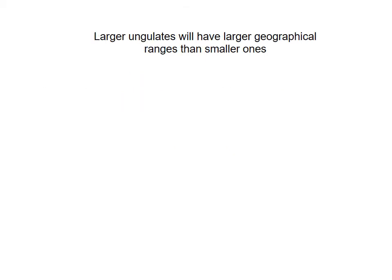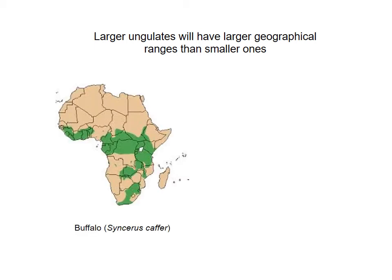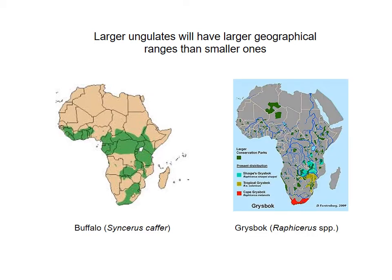Let's investigate whether this is the case by looking at the literature. Will larger ungulates have larger home ranges than smaller ones? This is the geographical distribution for Cape Buffalo across the African continent. Comparing that to the Cape Grysbok — of which there are actually three species: Sharpe's Grysbok in Zimbabwe and parts of Zambia, the tropical Grysbok coming down into the Kruger National Park, and then the Cape Grysbok — we can see the grysbok has a much smaller and much patchier distribution. So our first prediction, that larger ungulates will have larger home ranges than smaller ones, seems to be the case.